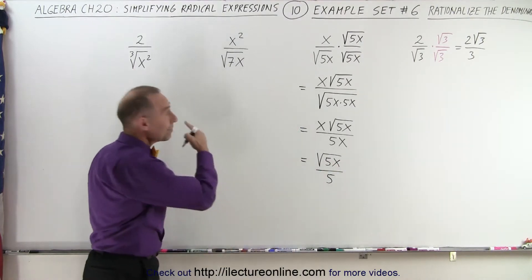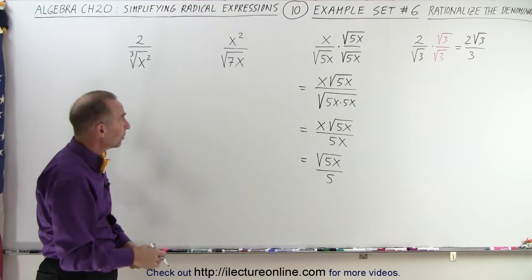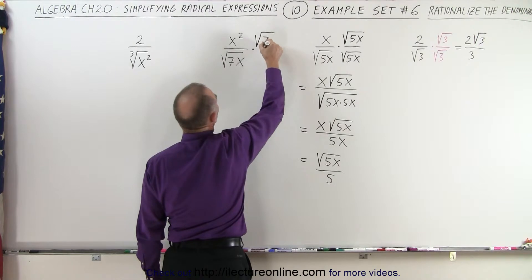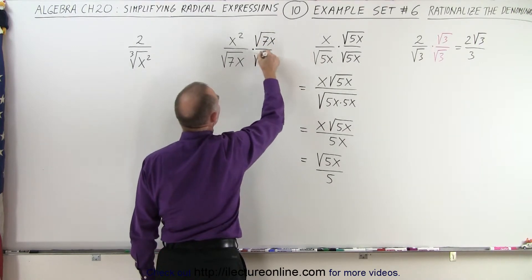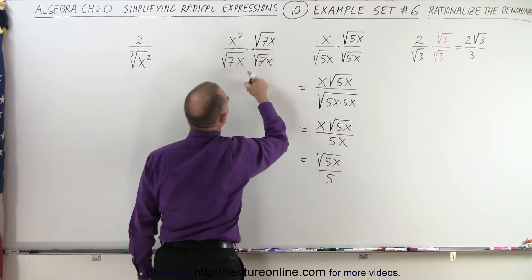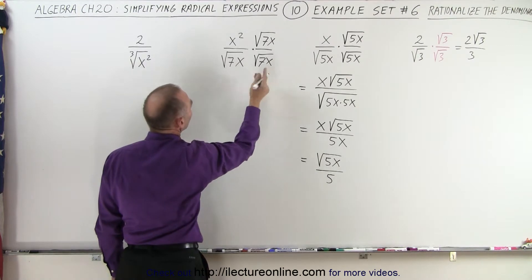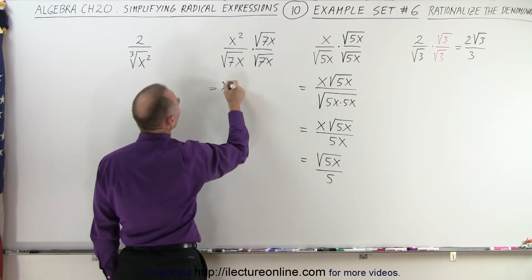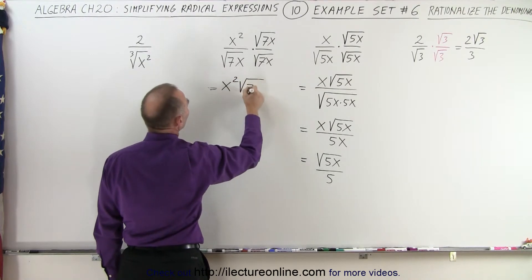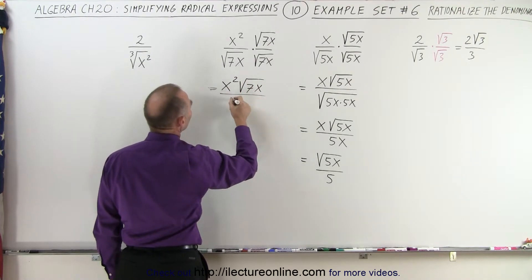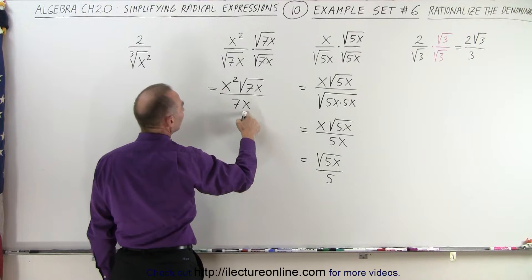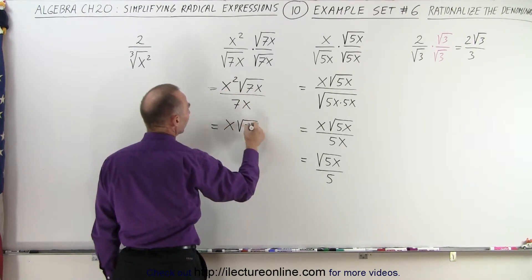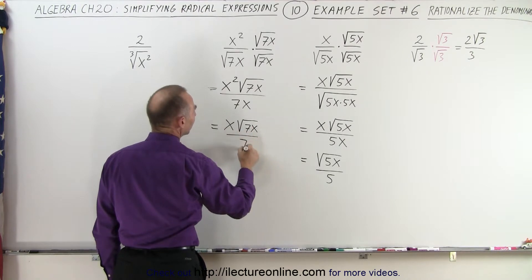Here we see the same pattern again. Whenever we have a radical in the denominator, we multiply the numerator and the denominator by what's inside the denominator. Here we multiply both sides by the square root of 7x. The numerator becomes x squared times the square root of 7x, and the denominator becomes 7x. One x cancels, so this becomes x times the square root of 7x divided by 7.